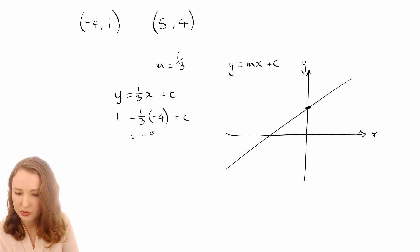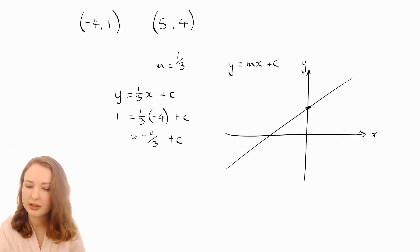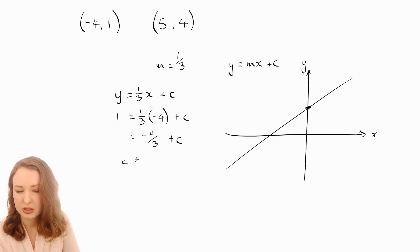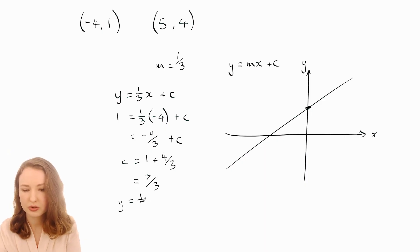So that's -4/3 plus c. We want to move that over the other side so add 4/3 to both sides and then you've got 1 plus 4/3 so c is 1 plus 4/3 and 1 is 3/3 so if you add those up you'll get 7/3. And there it is, that's the y-intercept. So if you were asked to find the equation of the line you would then write y equals 1/3x plus 7/3.